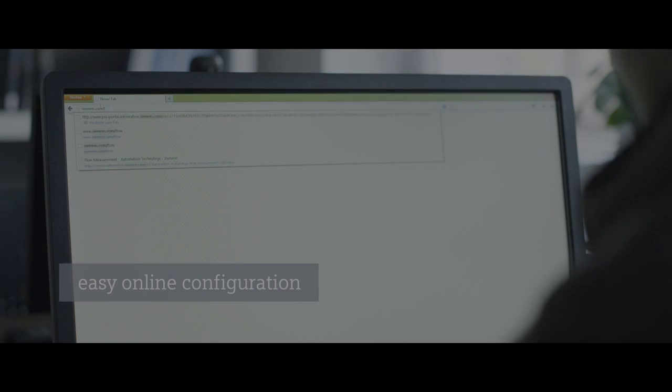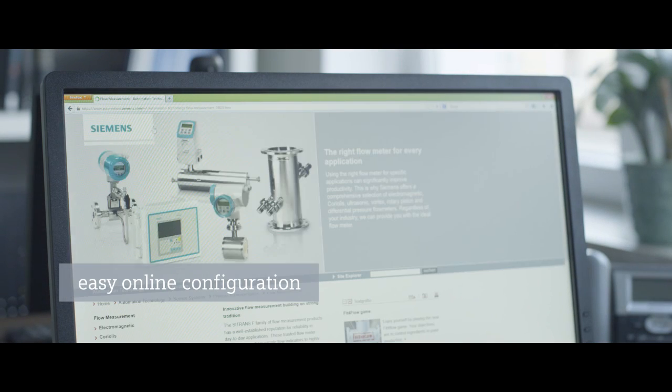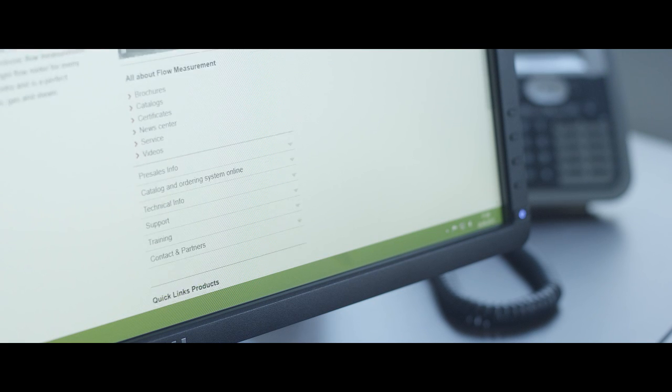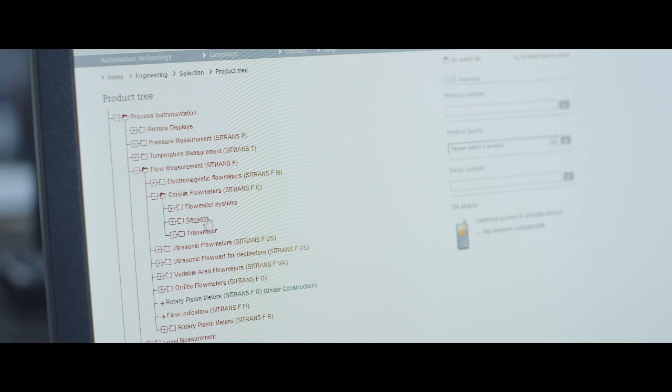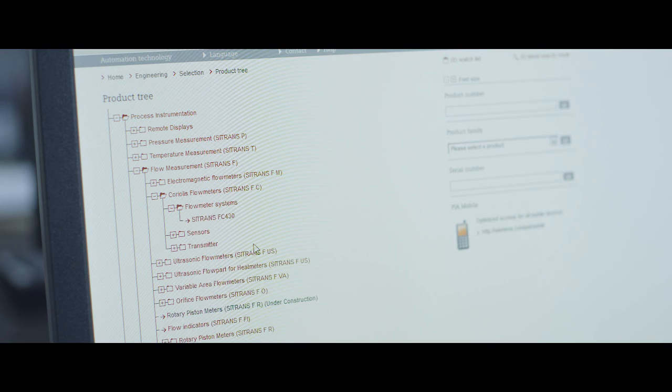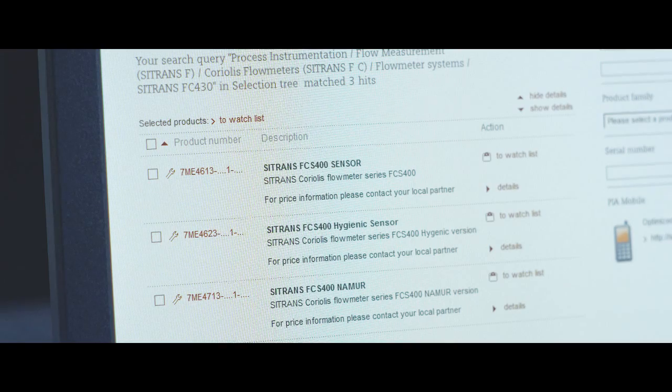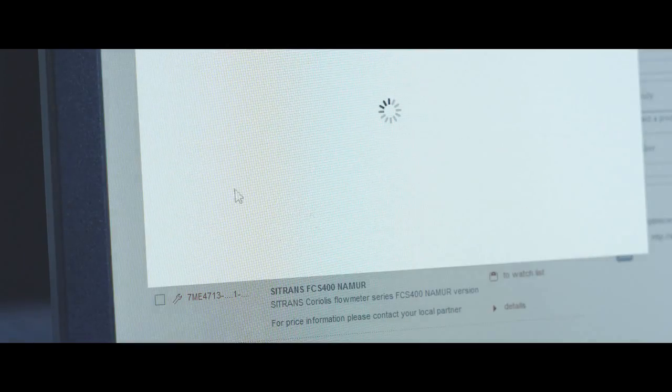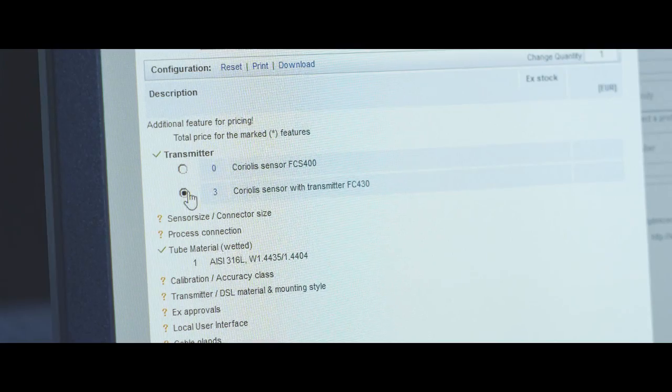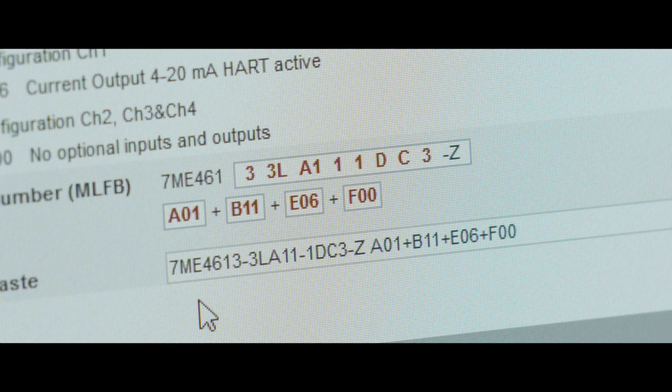Siemens offers millions of different product variations. Therefore, the scope of service includes configuration of every meter according to the customer's needs. The digital and highly automated production process ensures short delivery times and consistently high quality.